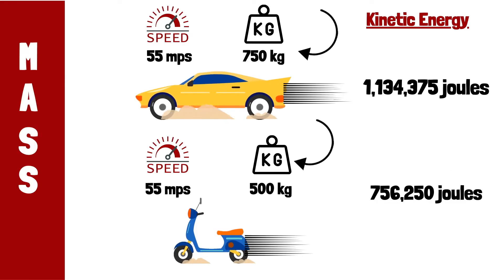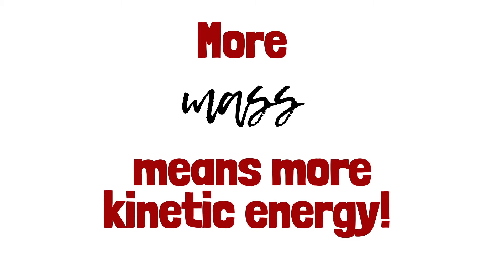Why? Well, that's because the mass of each of these items is different. The mass of the car is 750 kilograms, whereas the mass of the scooter is only 500 kilograms. If something has more mass, then it has more kinetic energy. This is the first factor we need to know when calculating kinetic energy.